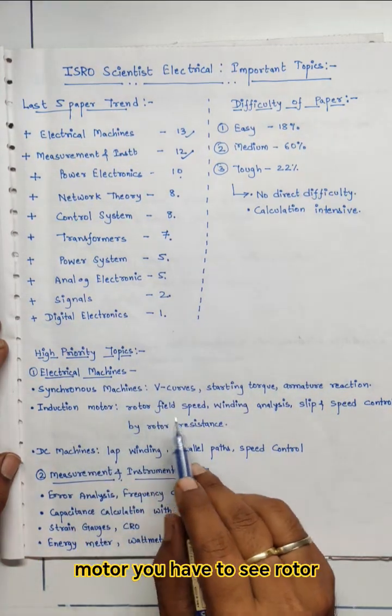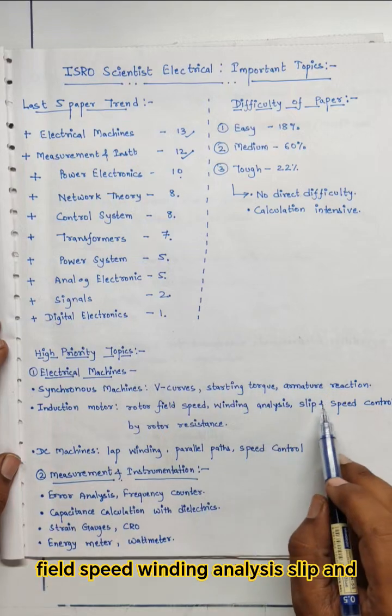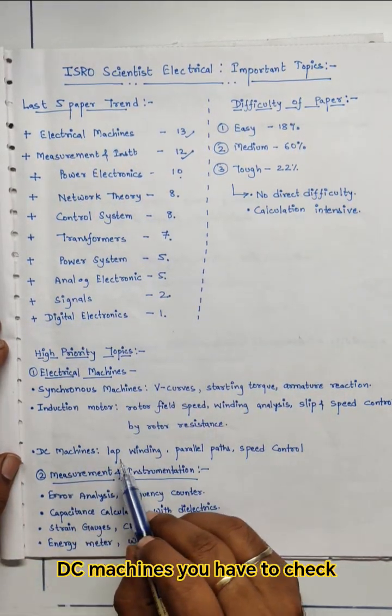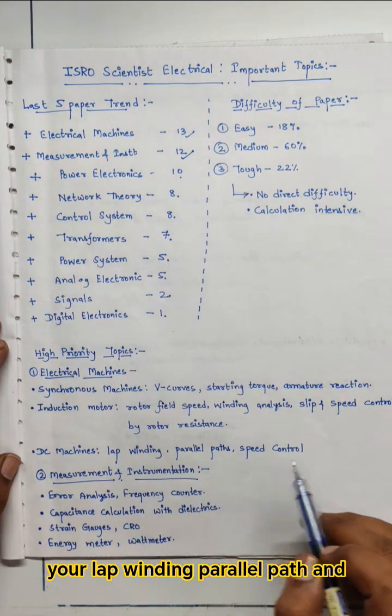In induction motor you have to see rotor field speed, winding analysis, slip and speed control by rotor resistance. In DC machines you have to check your lap winding, parallel path and speed control.